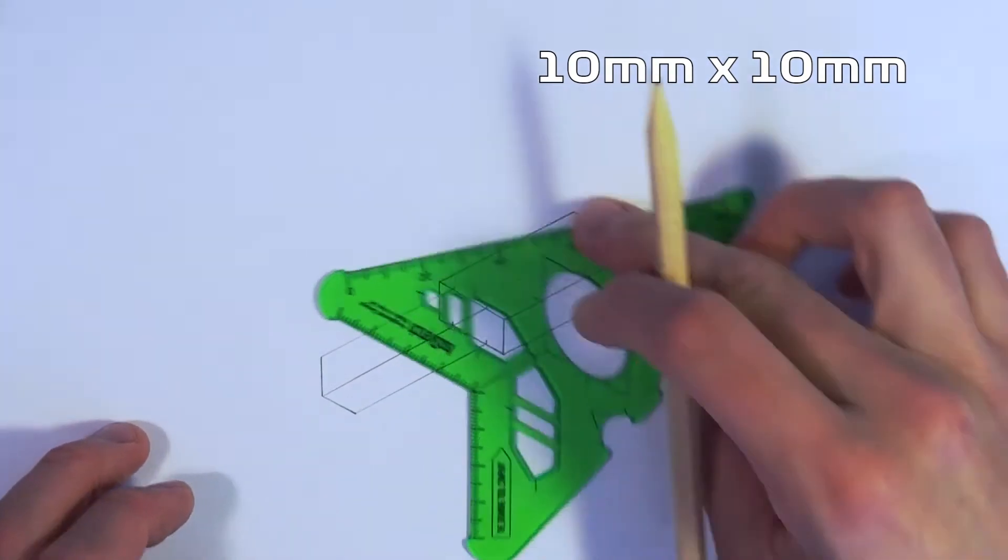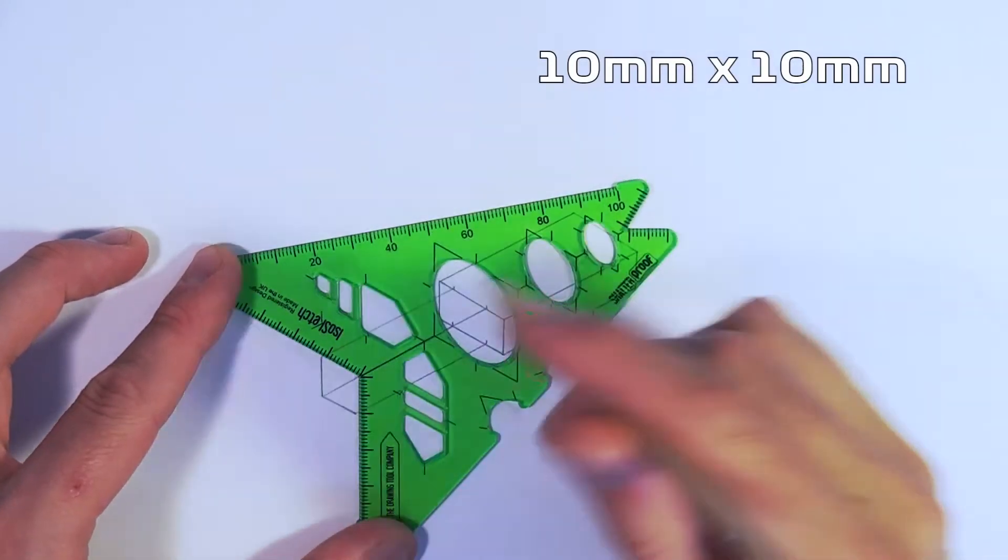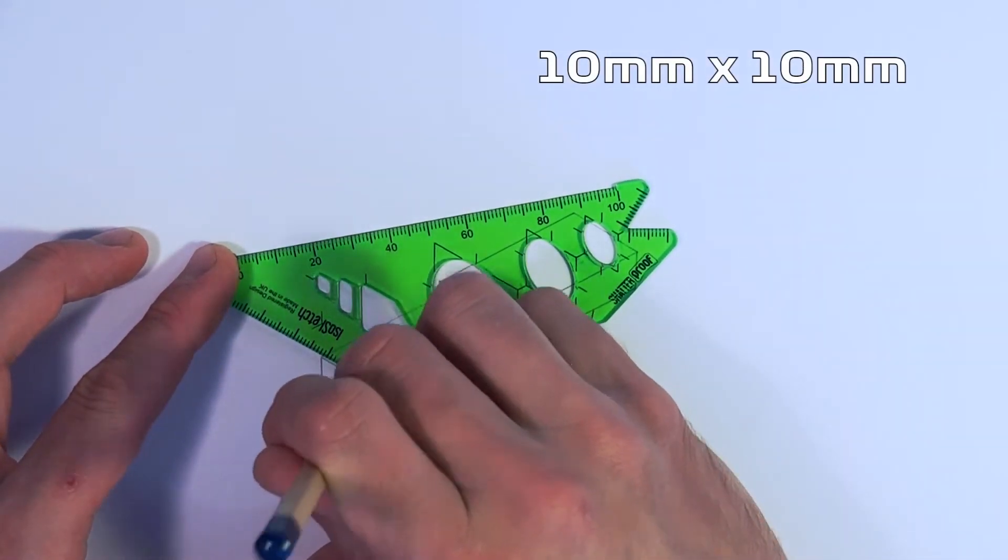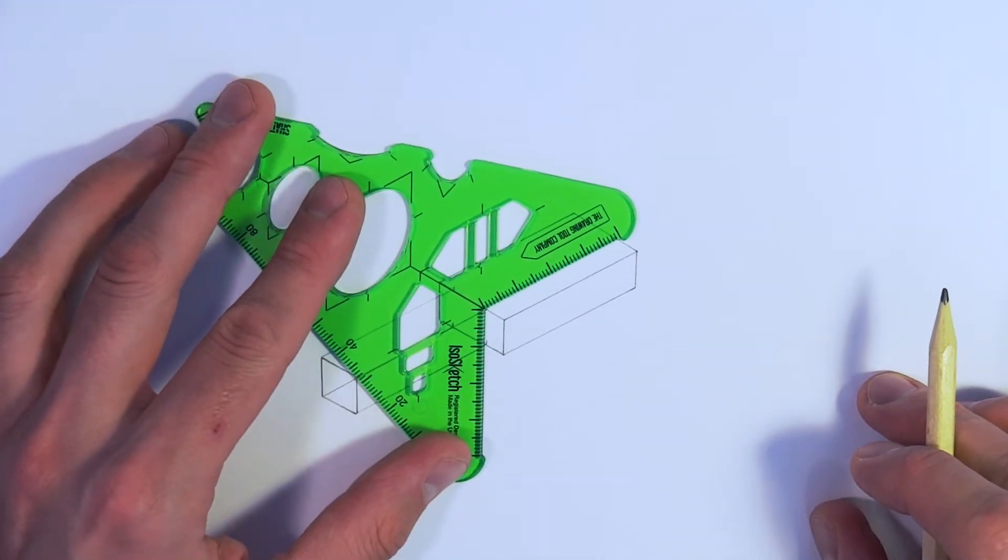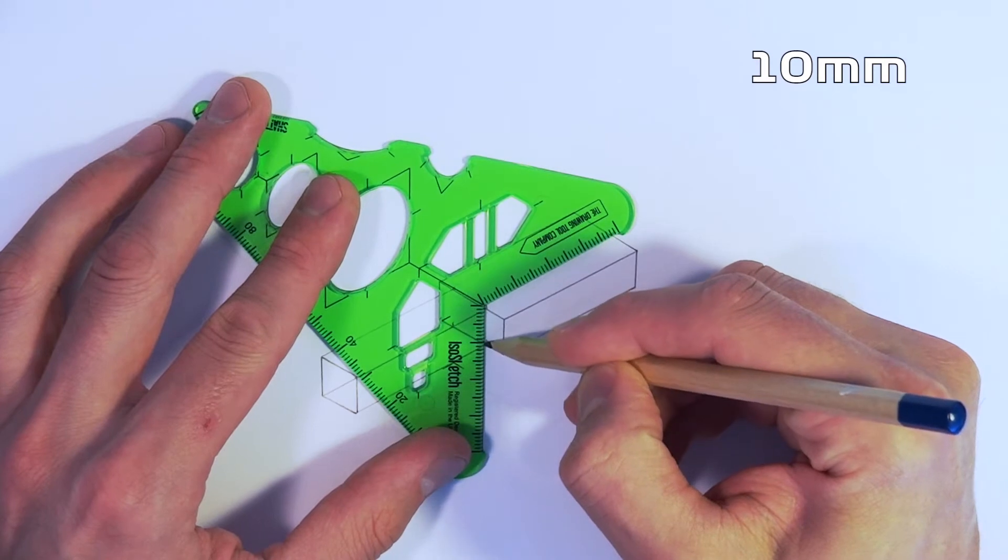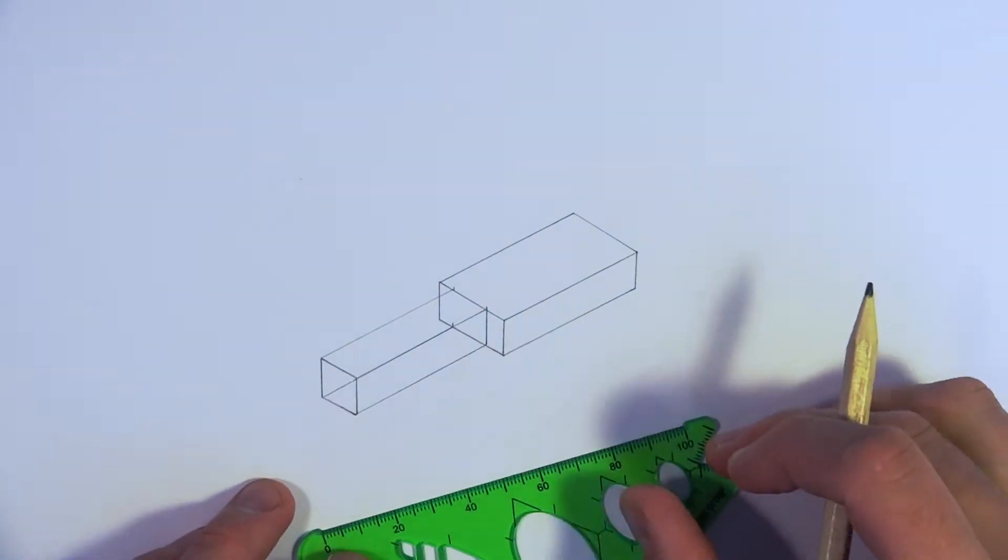So all we're doing now is just finishing this end off, and it's 10 millimeters by 10 millimeters just to finish off the nose cone of our car. How easy was that? Right, we're just going to finish off this little line here so that we've got all the lines that we need in place of the chassis, and we're going to move on to now marking out where our axles will go.